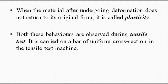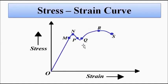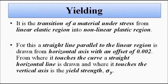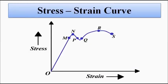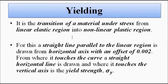Beyond N, after undergoing deformation due to stress, when the stress is removed the material does not return to its original shape — that is the plastic behavior. Yield strength and yielding refer to the phenomenon of transition of a material under tensile stress from the linear elastic region O-M-N to the N-P-Q region, that is the lower and upper yield points. This transition from the linear elastic region to the nonlinear plastic region is called yielding.